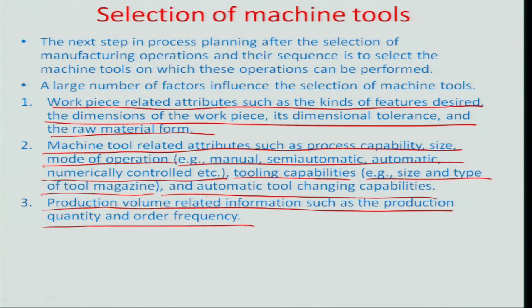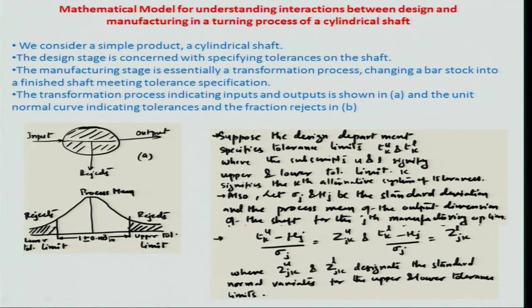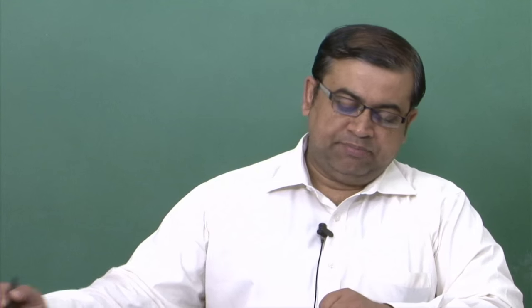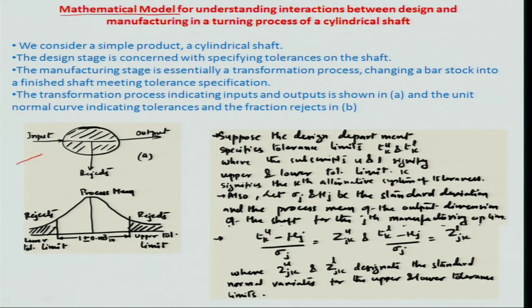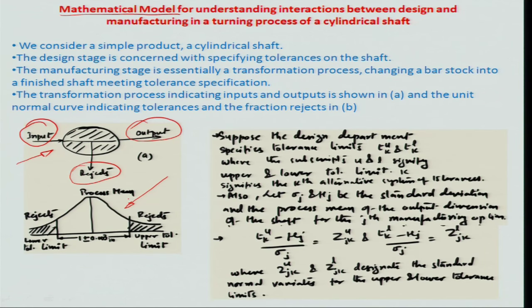We actually did a realistic problem where we talked about a mathematical model that enables you to select between different machines by matching the process capability with the design requirements — the tolerance of the particular system. We talked about the transformation process where there is some input into a machine, an output from the machine, and certain rejects. We tried to fit the normal distribution of a particular machine's output as part of its process capability with respect to the tolerances in the design.